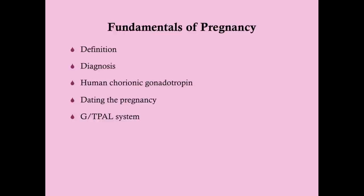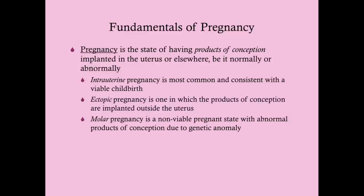Pregnancy is defined as the state of having products of conception implanted in the uterus or elsewhere, be it normally or abnormally. Products of conception is really just the union of a sperm and egg and what results from that — blastocysts and so on — ultimately implanting and becoming a baby in most cases.